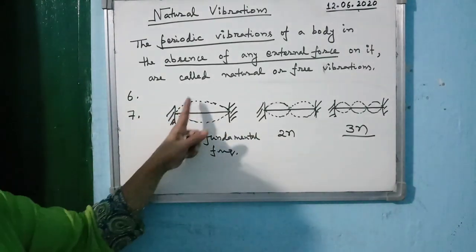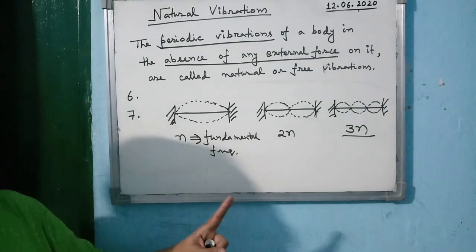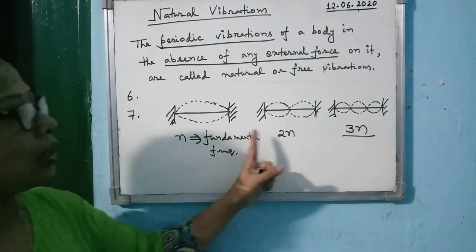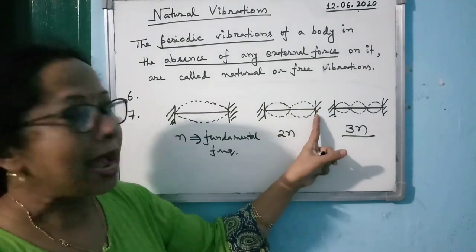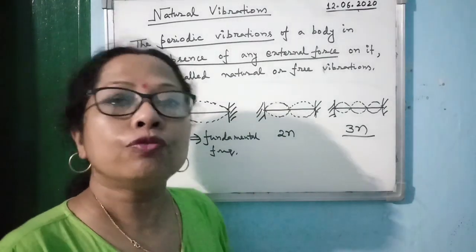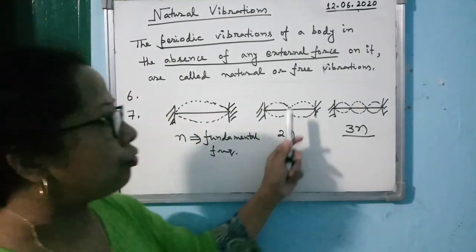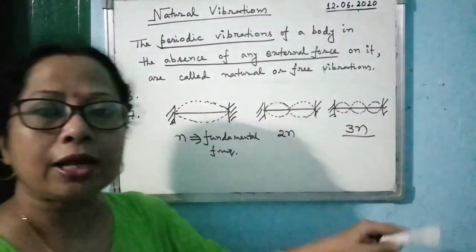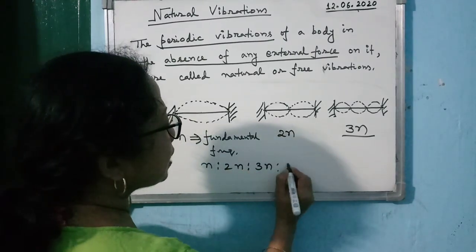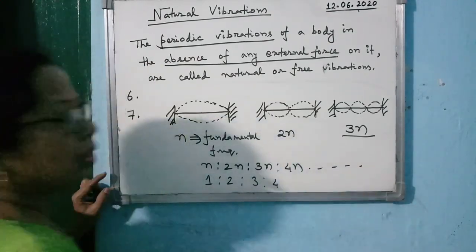The fundamental mode is when the string vibrates with one loop and frequency N. The next mode has two loops with frequency 2N, then three loops at 3N, four loops at 4N, and so on. The ratio of frequencies of sound produced is 1:2:3:4 and so on.